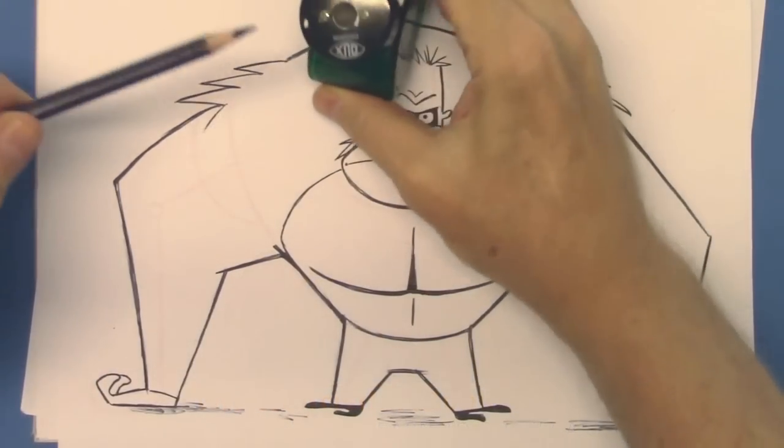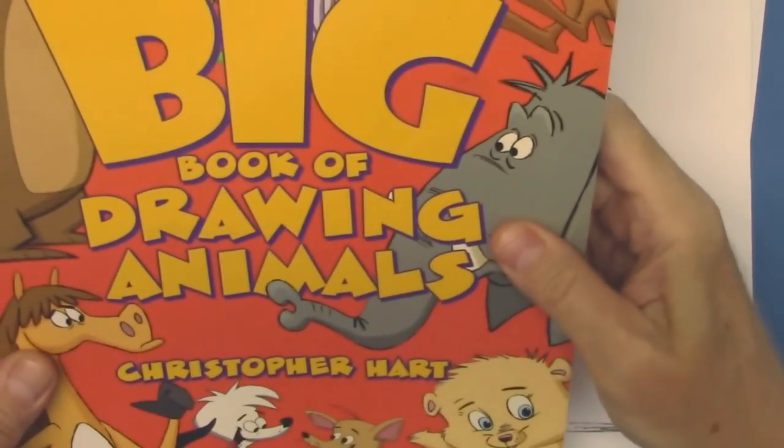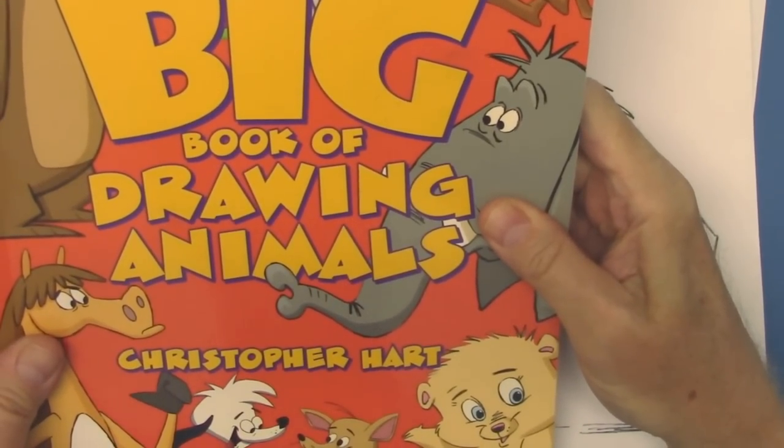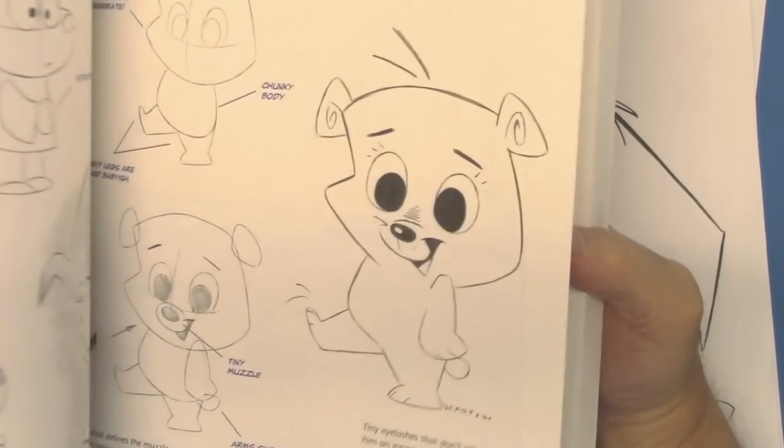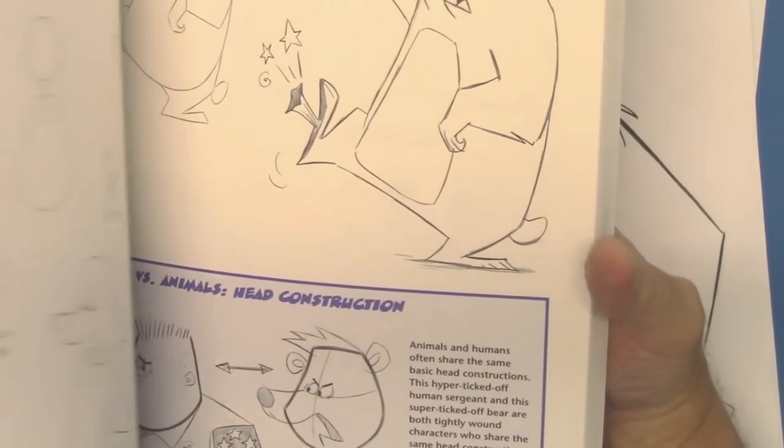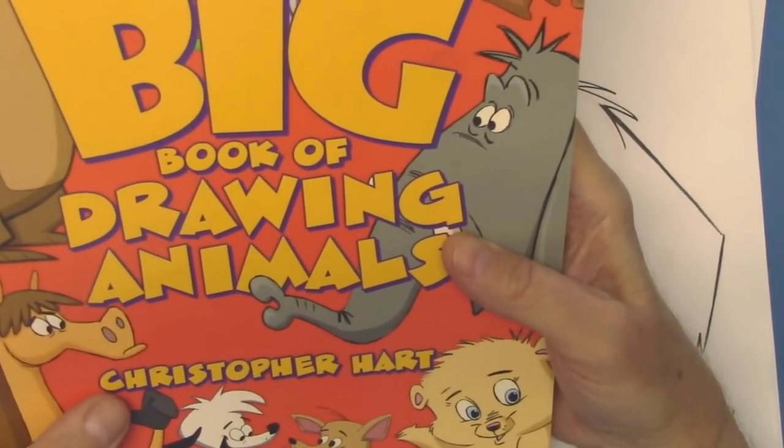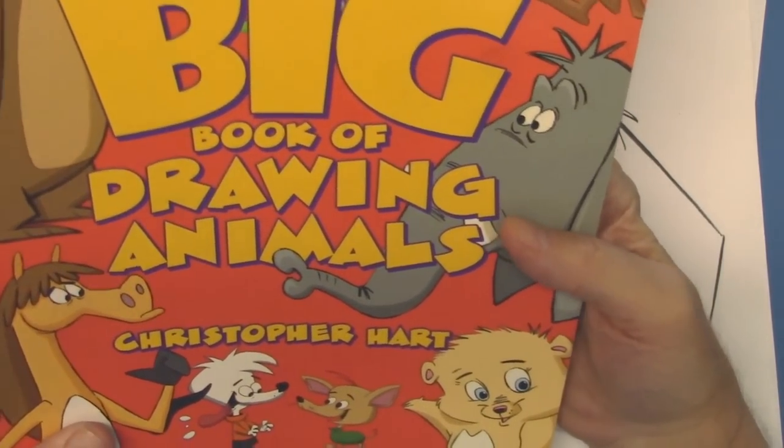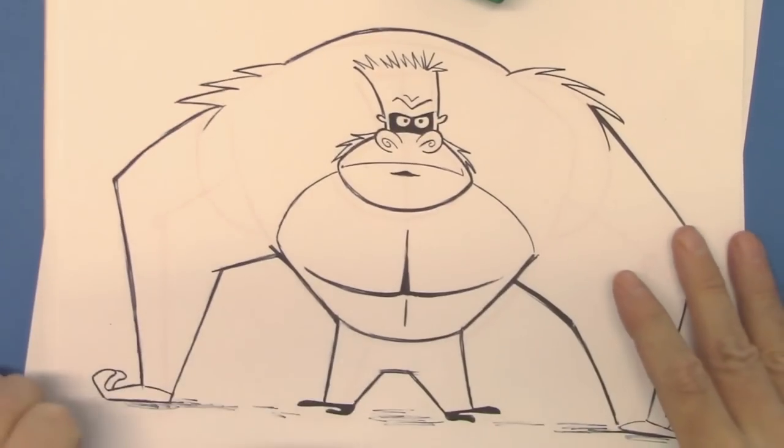Hi, my name is Chris Hart and I'm a cartoonist and author of the book The Cartoonist's Big Book of Drawing Animals. Lots of stuff in here: bears, lions, tigers, oh my, all sorts of things. I hope you take a look at it. You can get it anywhere: Amazon, Barnes & Noble, Michaels, Hobby Lobby, all that kind of good stuff.